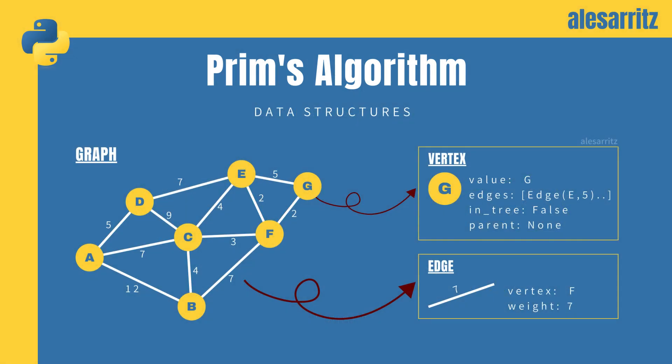Let's now take a look to the data structures we'll need during the development of the algorithm. We'll obviously need a graph with its vertices and edges. Each vertex will store its own value, its edges, an attribute for an eventual parent vertex, and a boolean attribute denoting whether it is already in the tree.